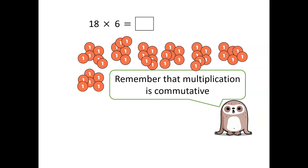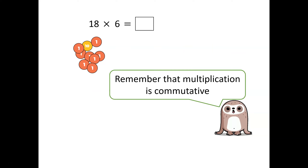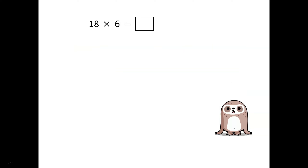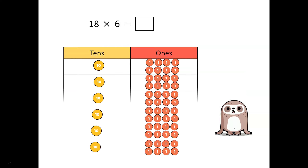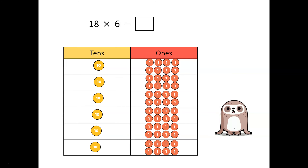Greg wants to remind us that multiplication is commutative. Finding eighteen lots of six this way could take a very long time. Instead, I could find six lots of eighteen. Let's see what this looks like on a place value grid. Eighteen is a two-digit number, so the grid has tens and ones. I'm multiplying by six, so I'm going to need six rows of eighteen. We have partitioned eighteen into tens and ones.